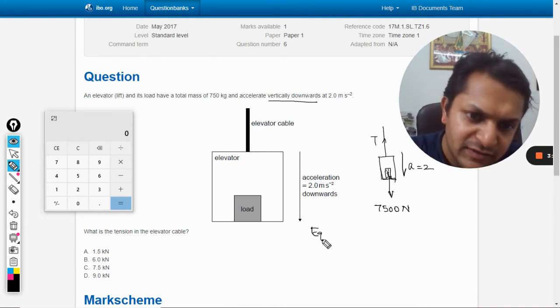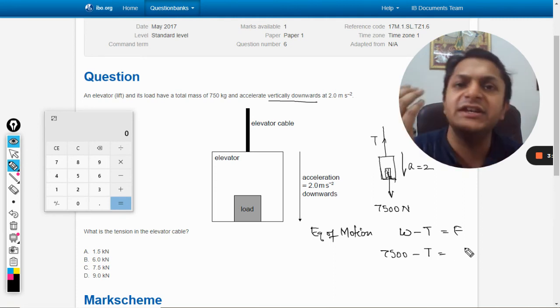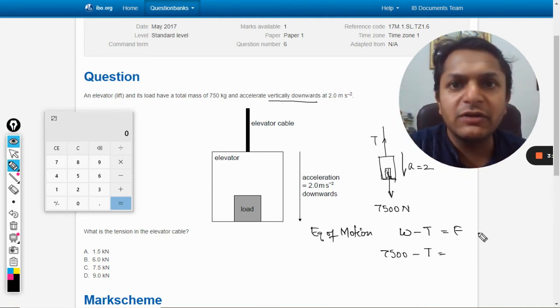So what will be our equation of motion? It will be weight minus T equals F. W is 7500, T is unknown, and what is the net force? Net force will equal mass times acceleration.